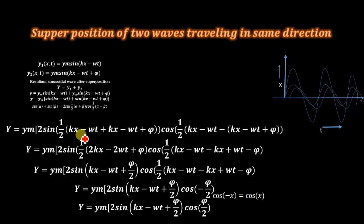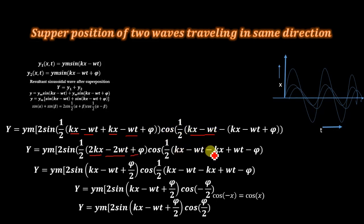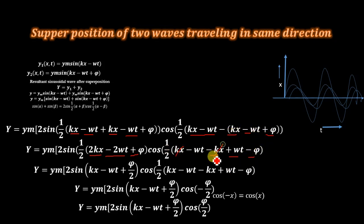Inside the cosine term: (kx − ωt) − (kx − ωt + π) — the kx cancels with −kx, and −ωt cancels with +ωt, leaving −π. The factor of 1/2 applied to −π gives −π/2. Meanwhile, the factor of 1/2 applied to 2kx − 2ωt gives kx − ωt. So we are left with π/2 inside the cosine.